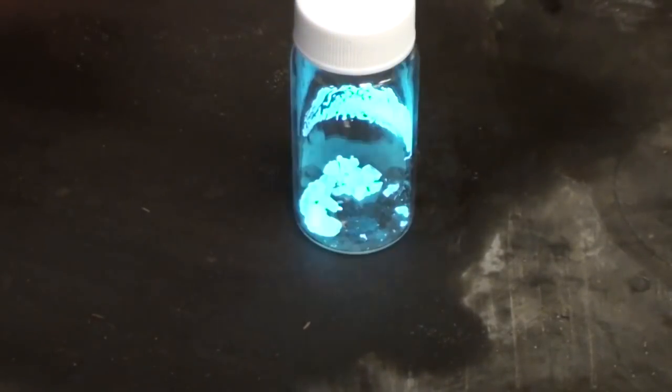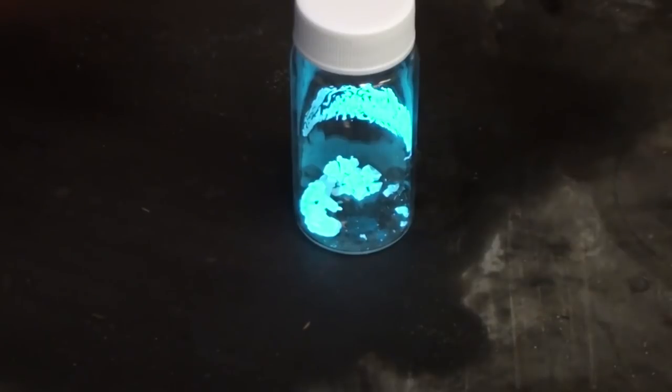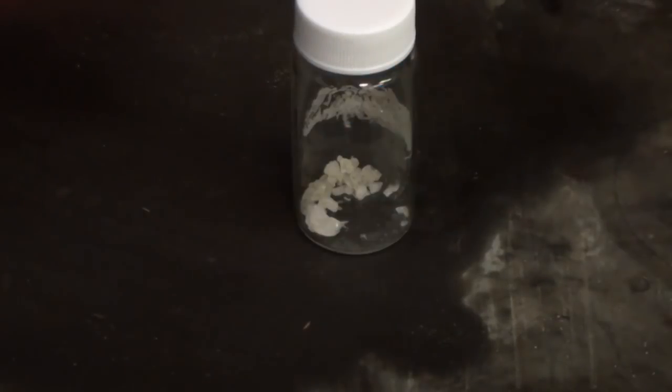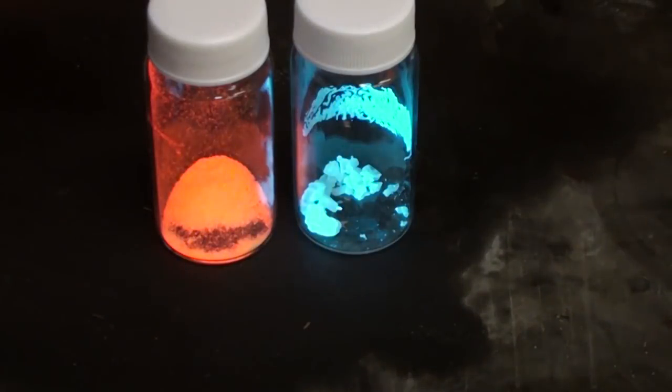Under ultraviolet light these crystals exhibit a nice blue fluorescence. This is the same color it will glow when smashed. While not quite as brilliant as the original red smashed glow crystals, it's still quite bright.